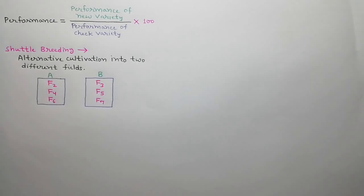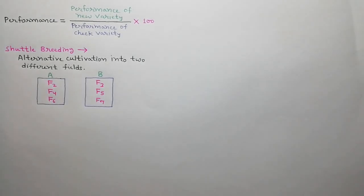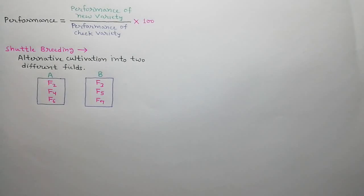Suppose there are two fields, A and B. F2, F4, and F6 generations are raised in field A, while F3, F5, and F7 generations are raised in field B.